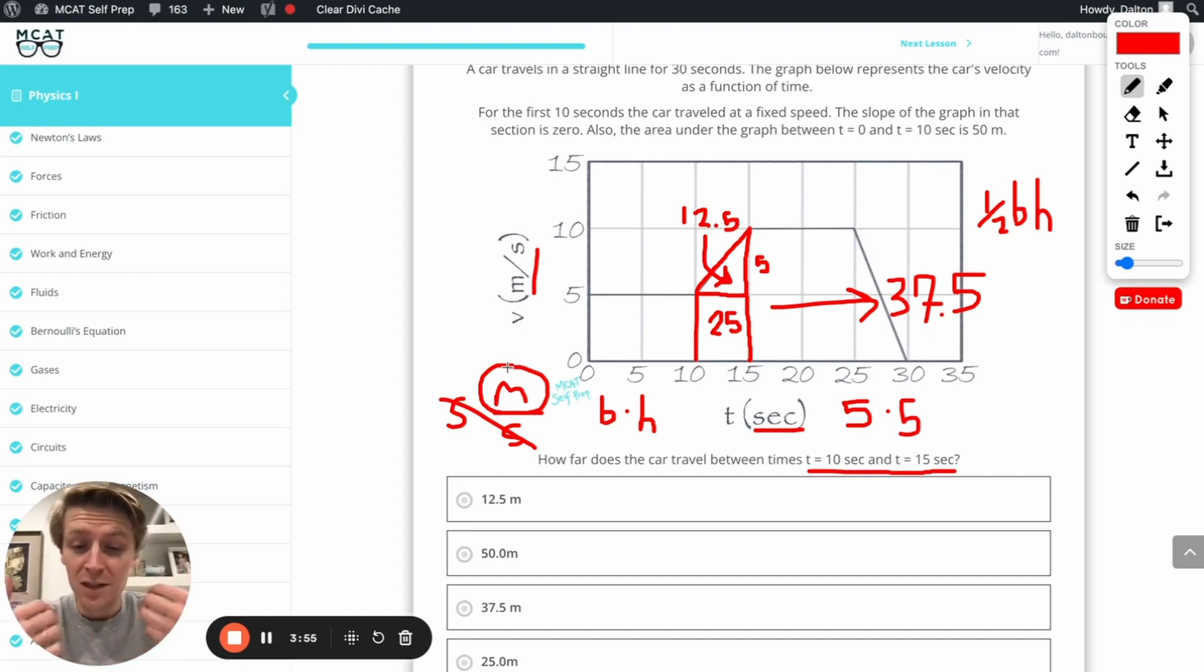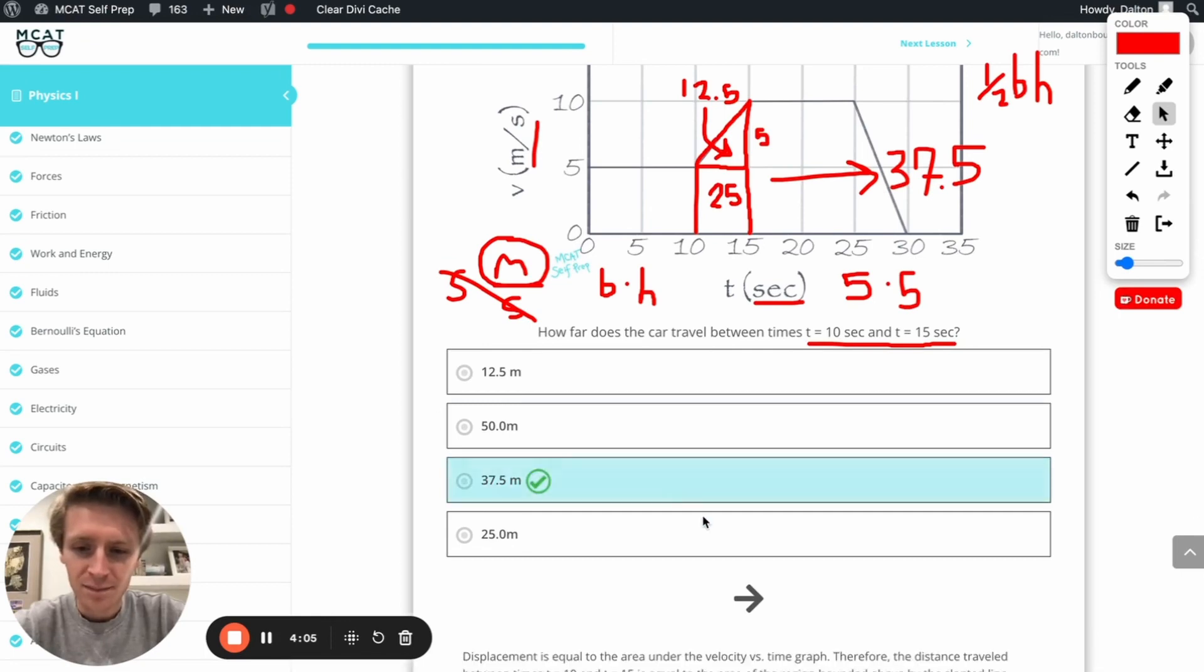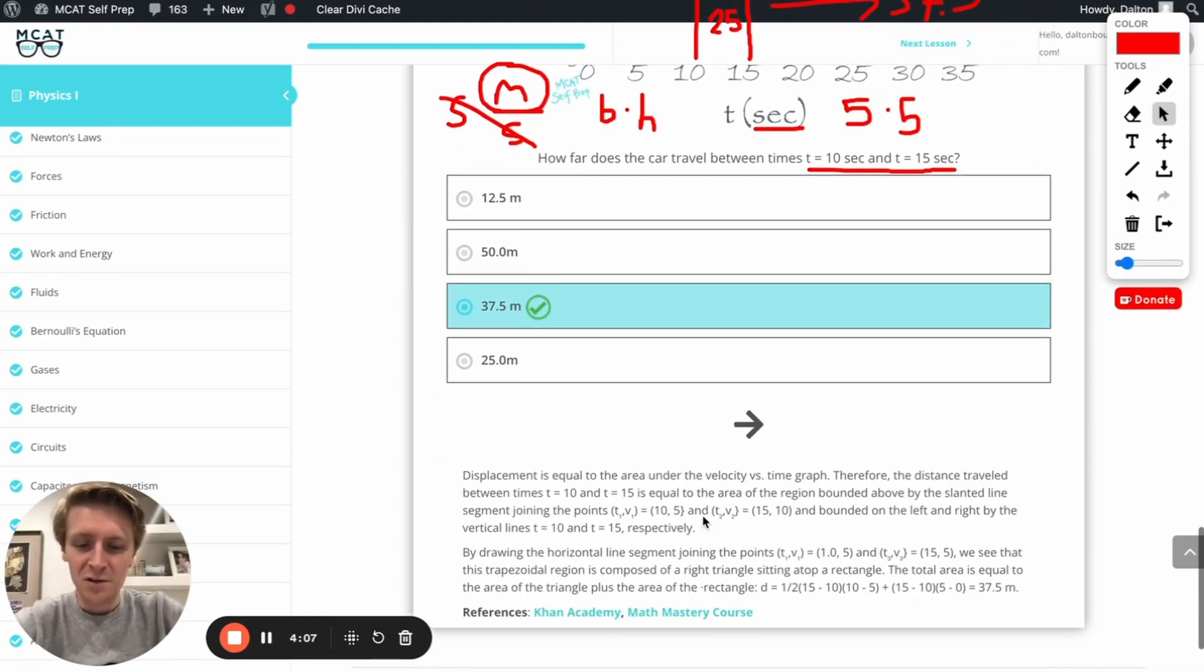So kind of interesting, meters is the unit for distance, and that's exactly what we wanted. So that's another helpful way to figure it out if you can't remember it off the top of your head. Let's go ahead and check our answer, 37.5. Awesome. Worked out great. Perfect.